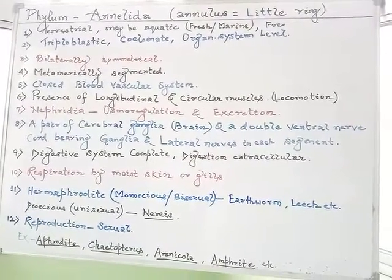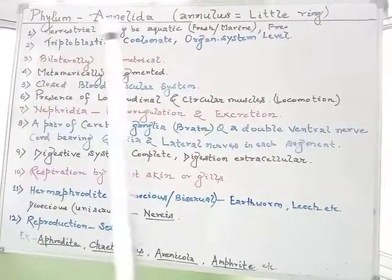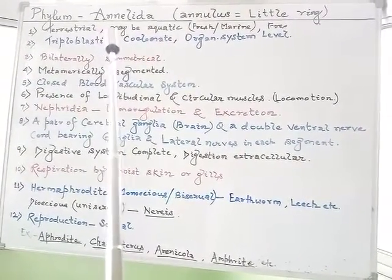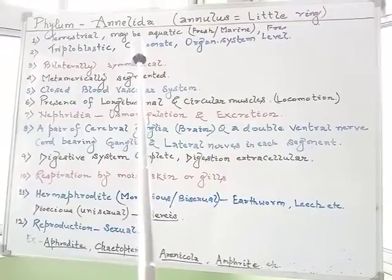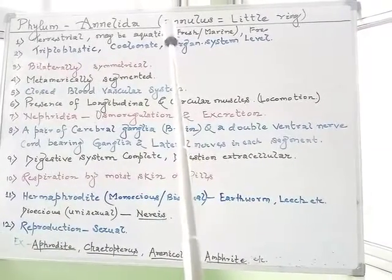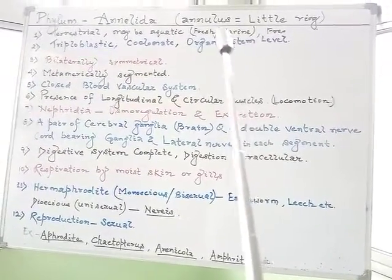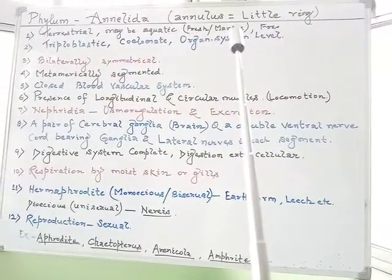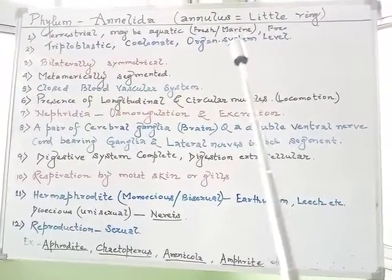Good morning students. Today we will discuss the next phyla in the animal kingdom, which is phylum Annelida. The most important characteristic we can understand from the name itself: Annelida is framed from the word 'annulus,' a Latin word meaning 'little ring-like structure.' The members of Annelida show such ring-like structures placed one above the other.